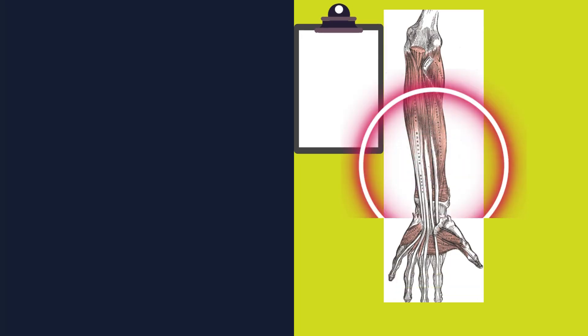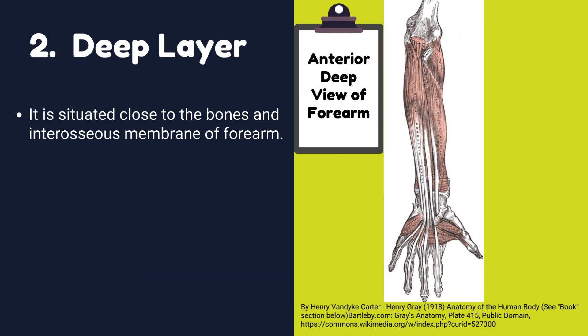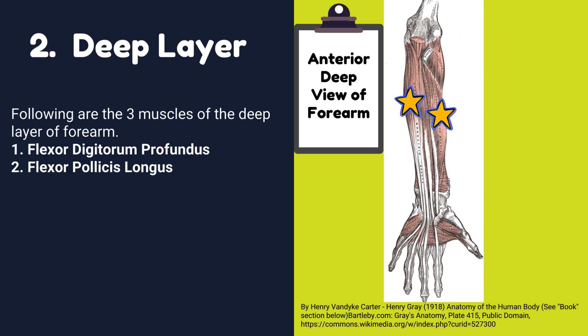Now we will discuss the deep layer of the anterior compartment. It is situated close to the bones and interosseous membrane of the forearm. It has three muscles: Flexor digitorum profundus, Flexor pollicis longus, and Pronator quadratus.